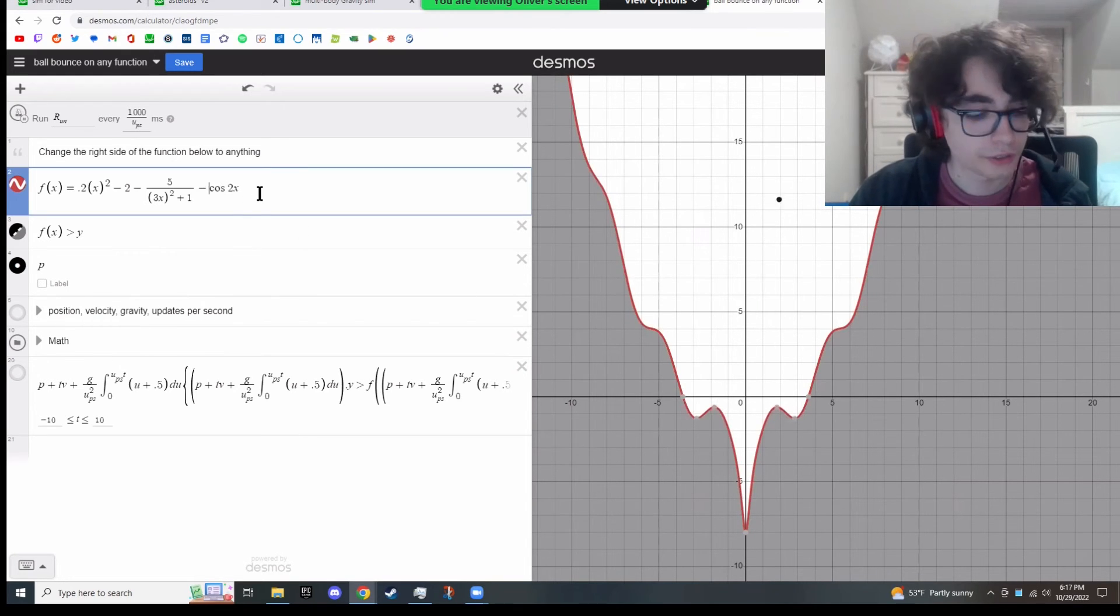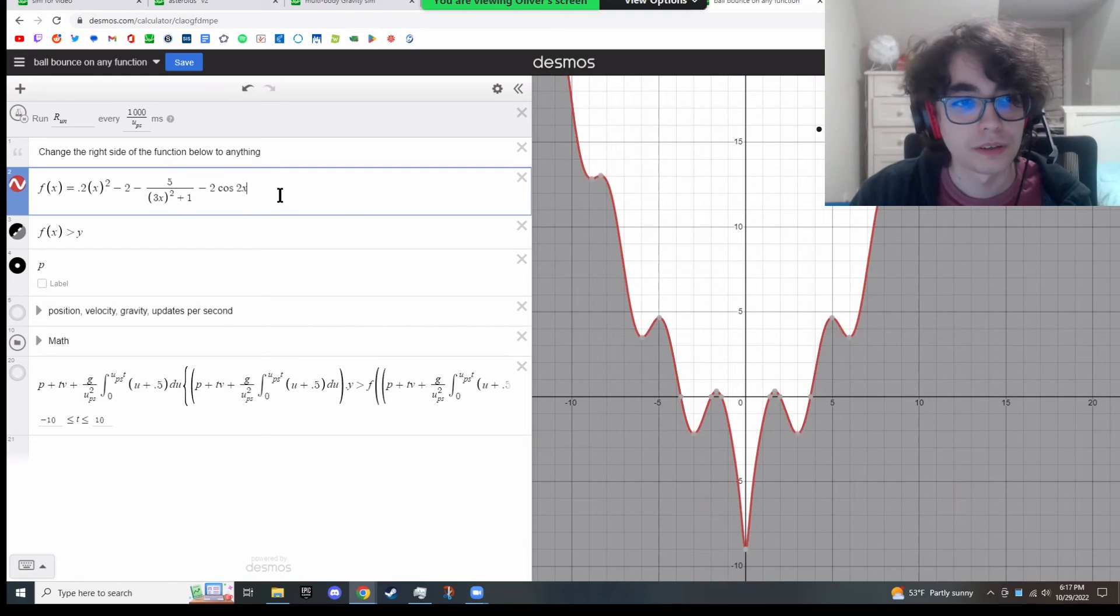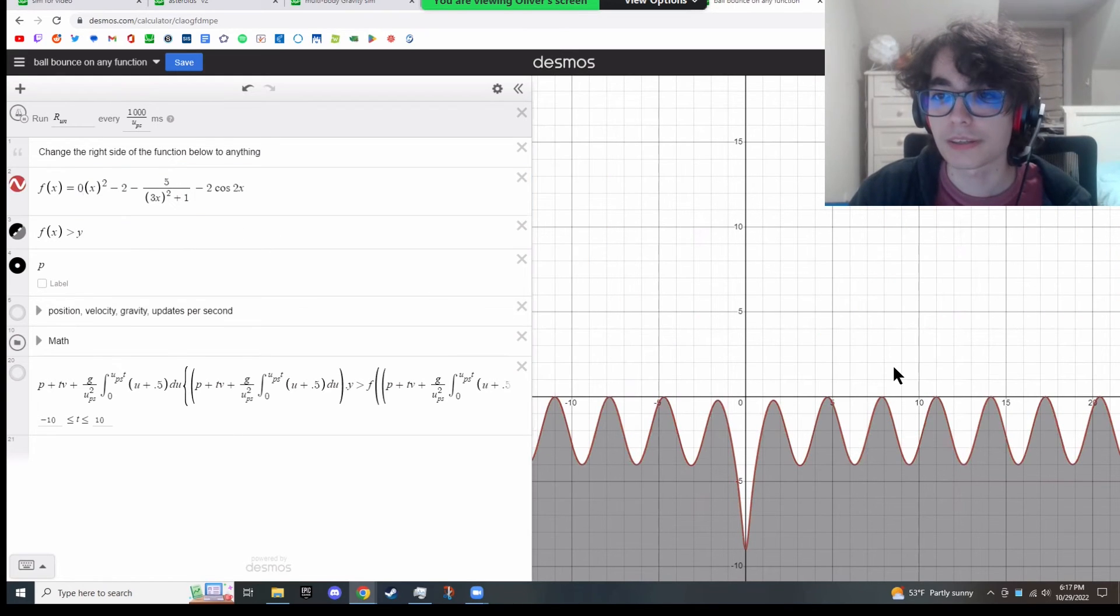Here I can change the cosine part of it. I can remove the x-squared component of it and get this shape. I was actually inspired by a similar thing I saw on Reddit.